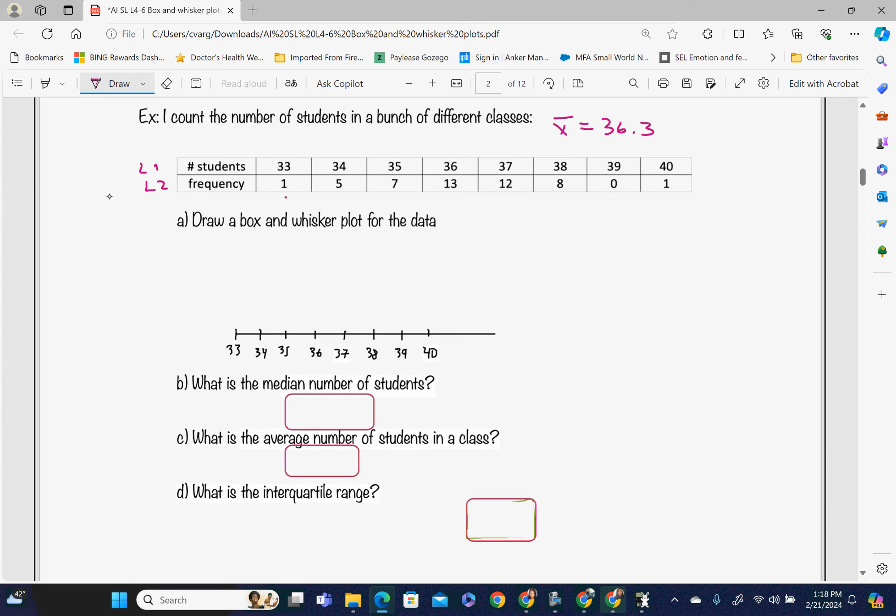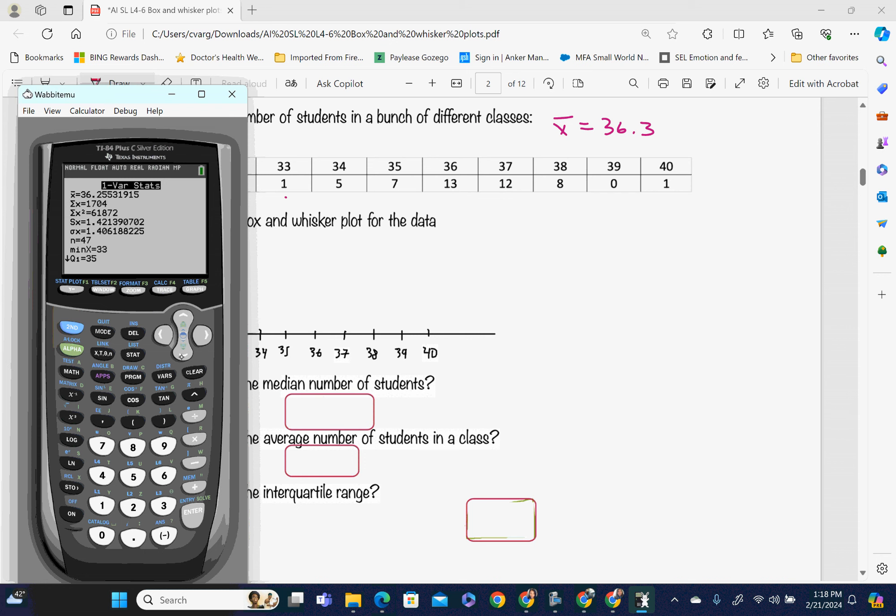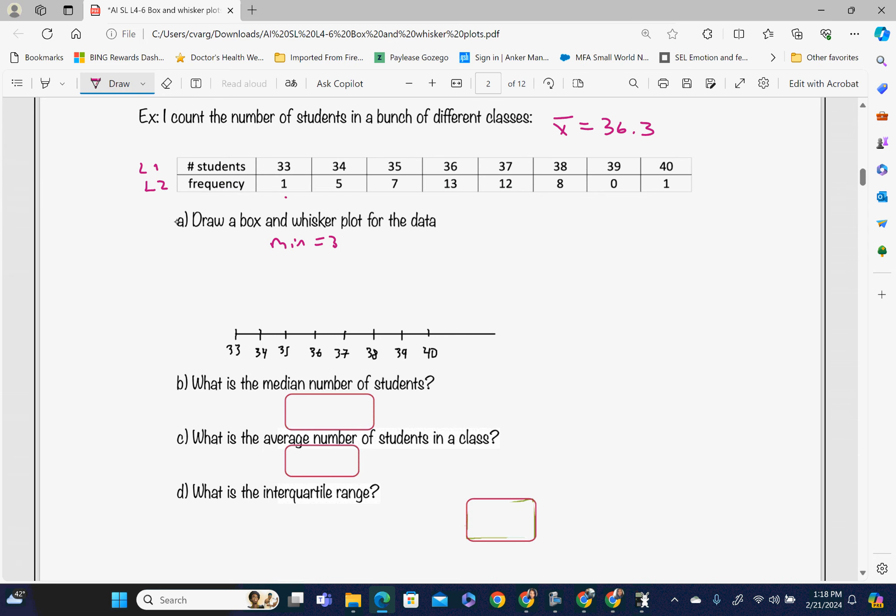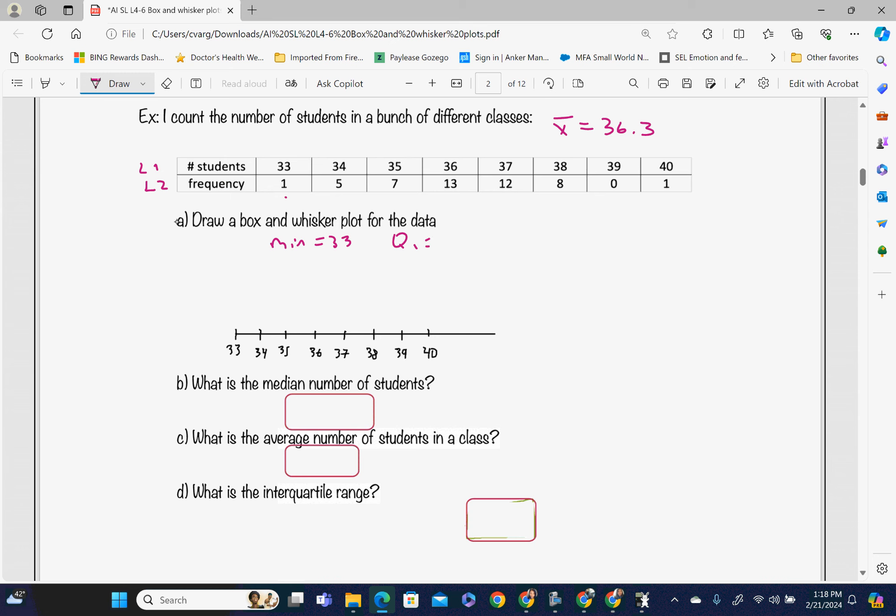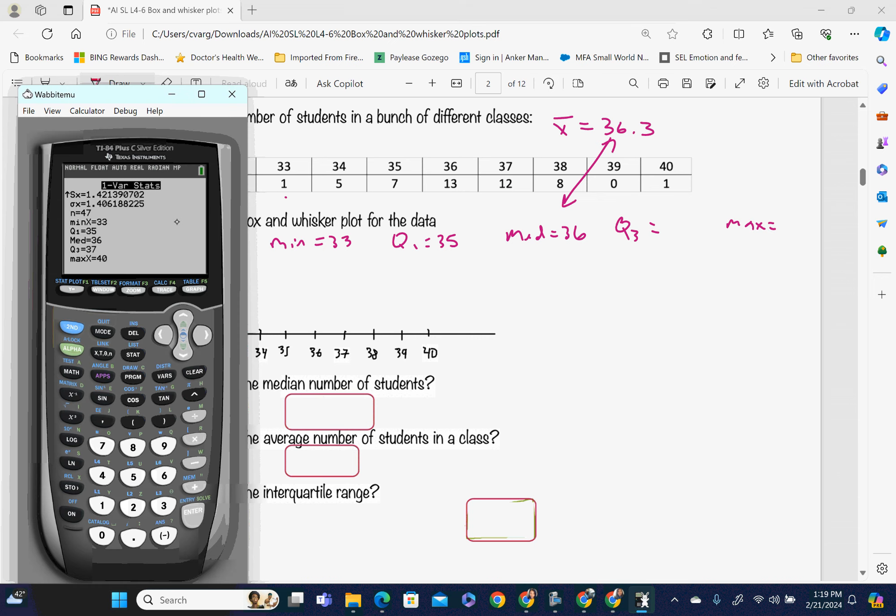For our five number summary, we need these numbers at the bottom. Our min is 33. Our Q1 is 35. Our median is 36. This does look symmetrical because our median and our mean are just about the same. Our Q3 is 37, and our max is 40. We need Q3 and max for our five number summary.